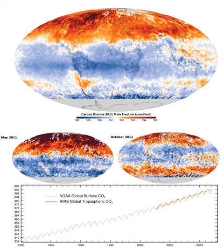CO2 absorbs and emits infrared radiation at wavelengths of 4.26 micrometers (asymmetric stretching vibrational mode) and 14.99 micrometers (bending vibrational mode), and consequently is a greenhouse gas that plays a significant role in influencing Earth's surface temperature through the greenhouse effect.